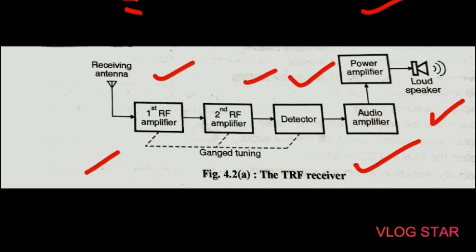AM transmission takes place in the medium wave (MW) band or in the short wave band. The frequency range for the medium wave band is from 530 kHz to 1640 kHz. Different radio stations operate at different frequencies in this range — for example, if the Pune station operates at a frequency of 800 kHz, then the operation of the TRF receiver can be described as follows.